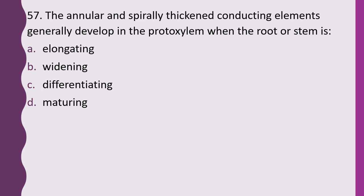Question 57. The annular and spirally thickened conducting elements generally develop in proto xylem when the root or stem is: elongating, widening, differentiating, or maturing. The correct answer is option D, when they are maturing.